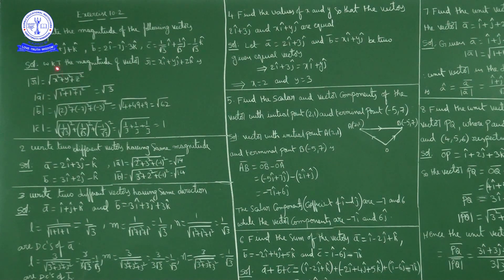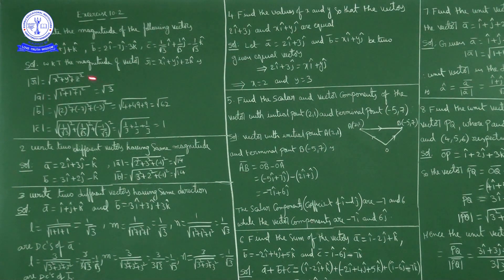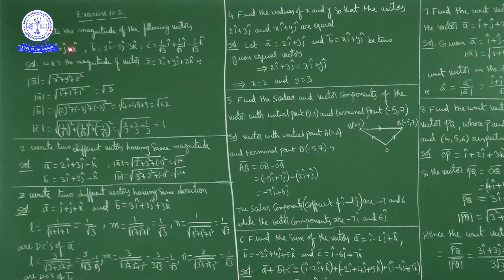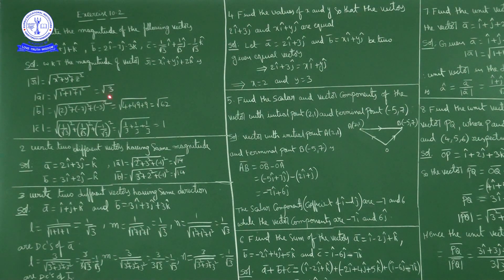Magnitude of a̅: a̅ = î + ĵ + k̂, so the i-coefficient is 1, j-coefficient is 1, k-coefficient is 1. Therefore magnitude of a̅ = √(1² + 1² + 1²) = √3.